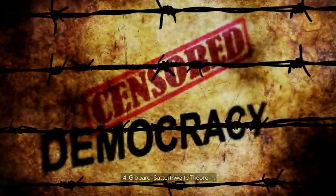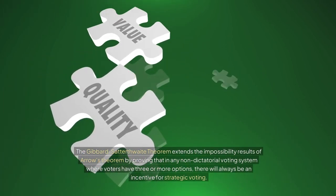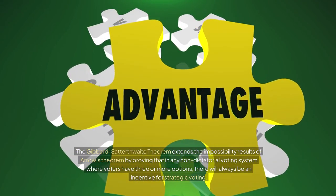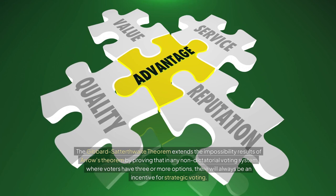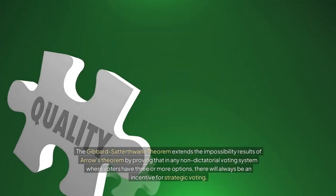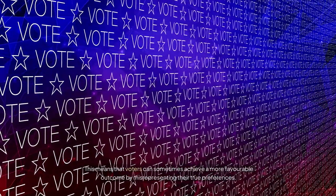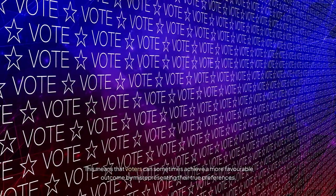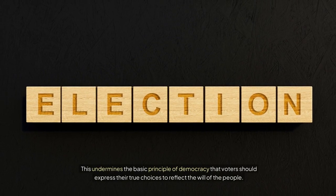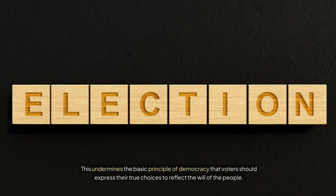Gibbard-Satterthwaite Theorem. The Gibbard-Satterthwaite Theorem extends the impossibility results of Arrow's theorem by proving that in any non-dictatorial voting system where voters have three or more options, there will always be an incentive for strategic voting. This means that voters can sometimes achieve a more favorable outcome by misrepresenting their true preferences, undermining the basic democratic principle that voters should express their true choices to reflect the will of the people.